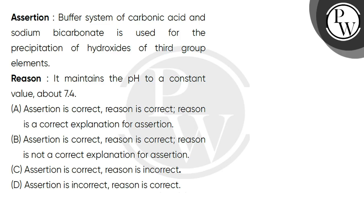Hello students, let's see this question. The question says that you have an assertion and a reason to understand the correct option to choose. The assertion says that the buffer system of carbonic acid and sodium bicarbonate is used for the precipitation of hydroxides of third group elements. The reason says that it maintains the pH to a constant value of about 7.4.